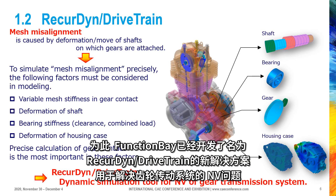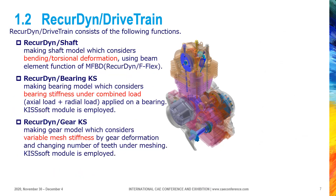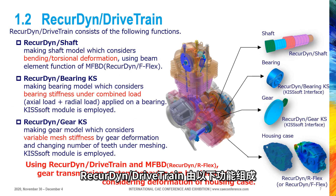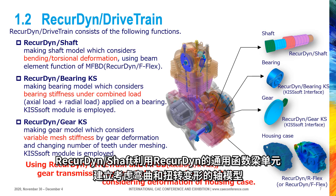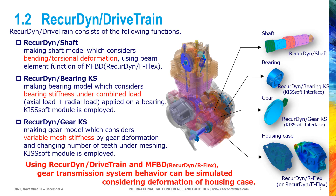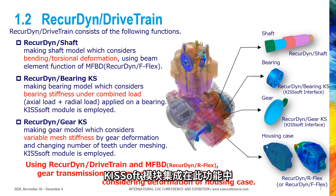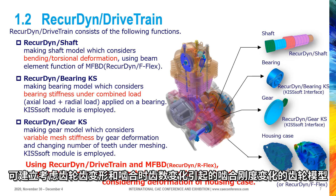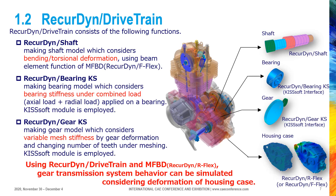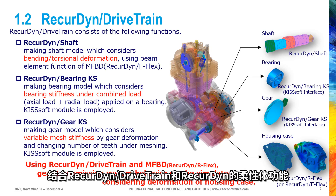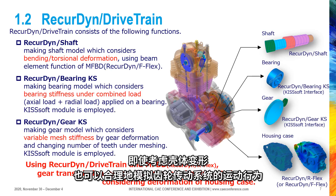Function Bay has developed a new solution named Ricardine drivetrain for NV of gear transmission systems. Ricardine drivetrain consists of the following functions: Ricardine Shaft, which builds a shaft model considering bending and torsional deformation using beam elements for flexible body modeling; Ricardine Bearing KS, which builds a bearing model considering bearing stiffness under combined axial and radial load with KISSsoft module integrated; and Ricardine Gear KS, which builds a gear model considering variable mesh stiffness caused by gear teeth deformation and changing number of teeth under meshing, also with KISSsoft module integrated. Combining Ricardine drivetrain with the general flexible body function of Ricardine, gear transmission system behavior can be simulated reasonably even considering housing case deformation.